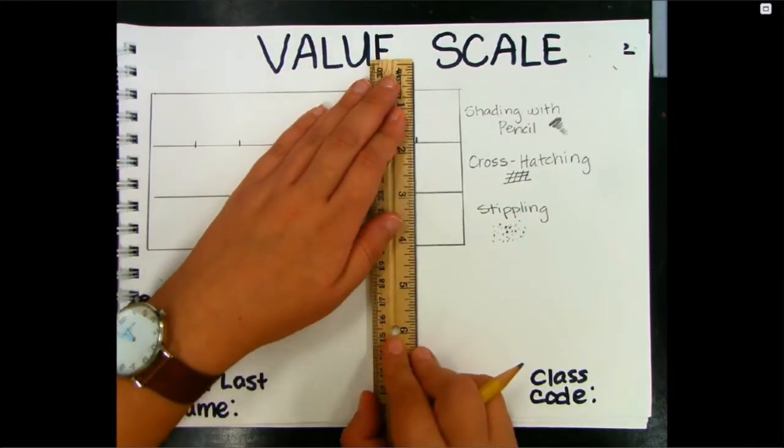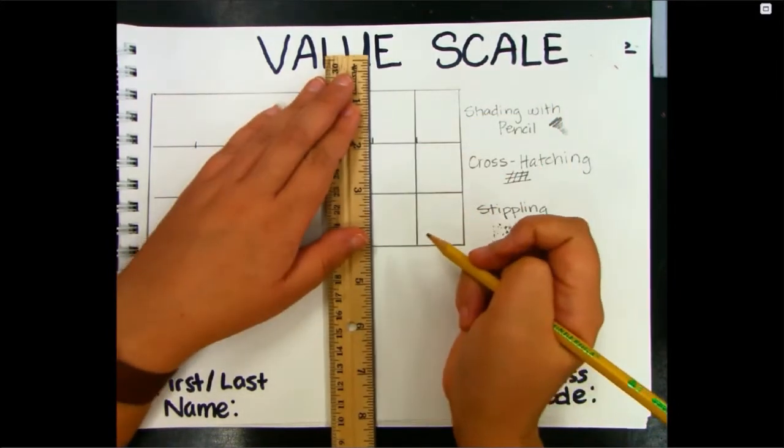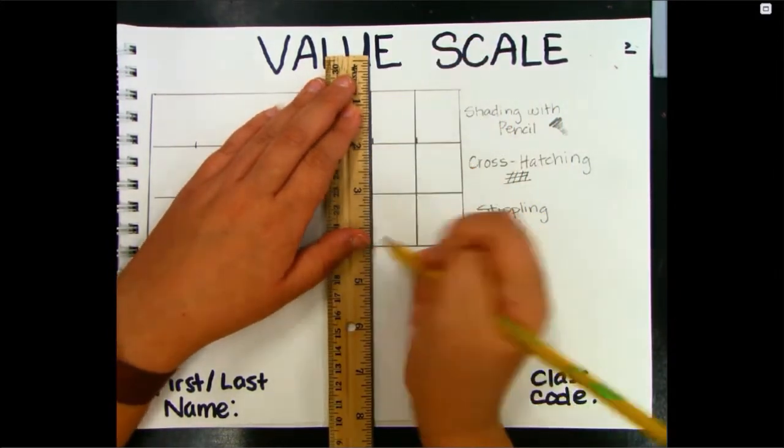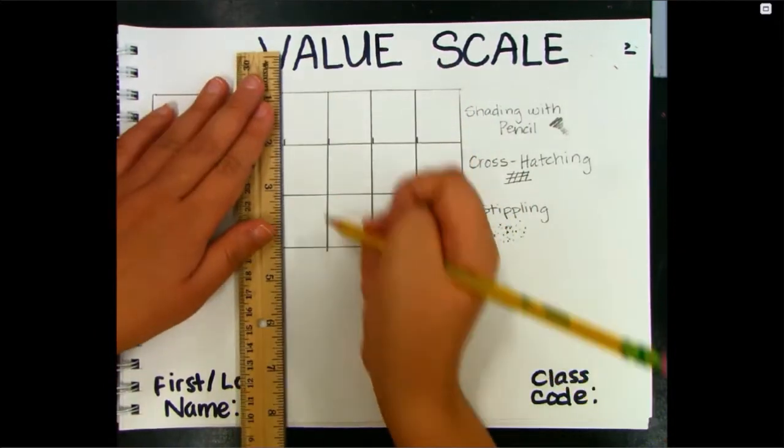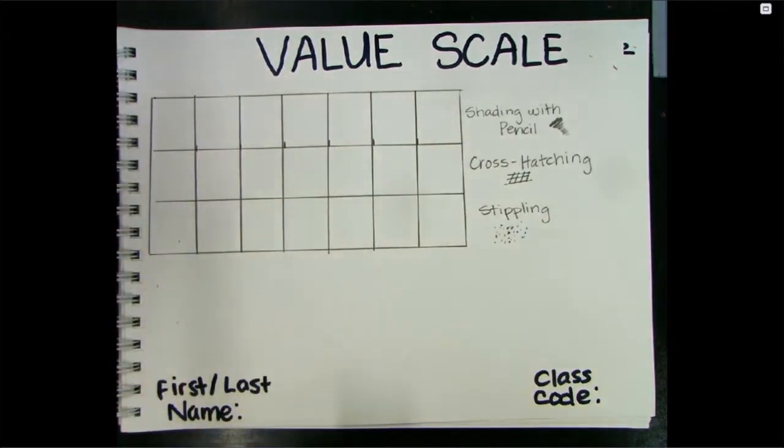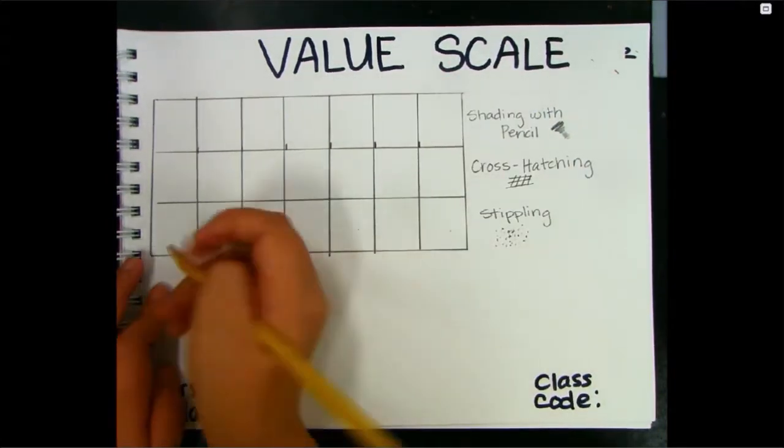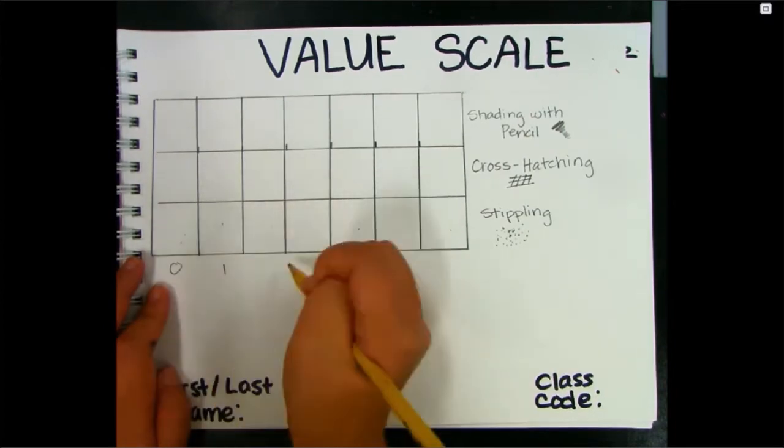After you do it once, you can then move your ruler up and down and draw vertical lines down across each of those boxes. You should have a total of seven boxes.